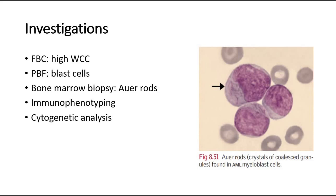On biopsy, acute myeloid leukemia is differentiated from acute lymphocytic leukemia by Auer rods. This picture over here shows Auer rods, which are a significant finding in acute myeloid leukemia.